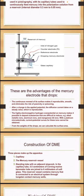The highly electronegative hydrogen overpotential on mercury makes it possible to deposit substances that are difficult to reduce, for example alkaline metallic ions, aluminum ions, and magnesium ions. With a platinum micro electrode, current-potential curves for these ions cannot be obtained.